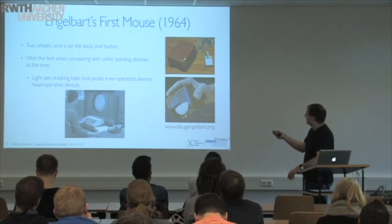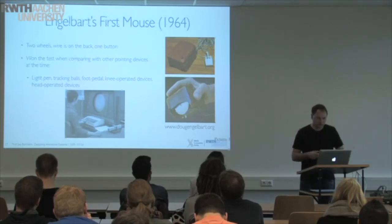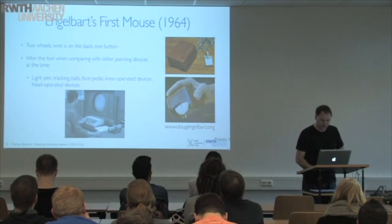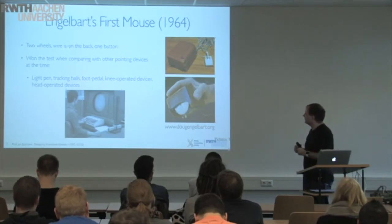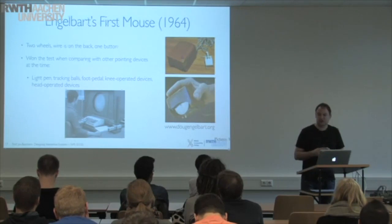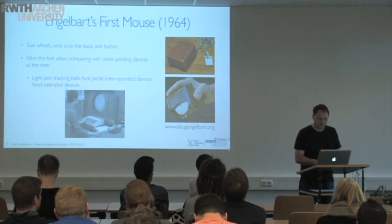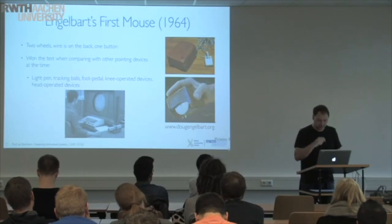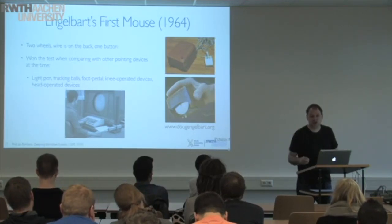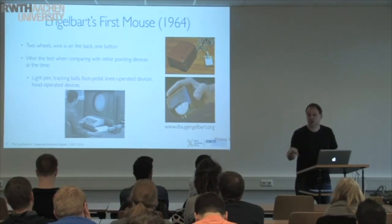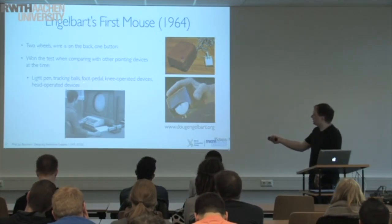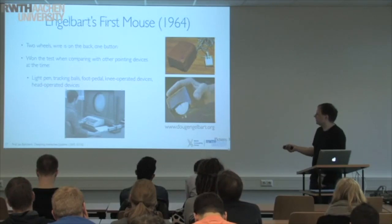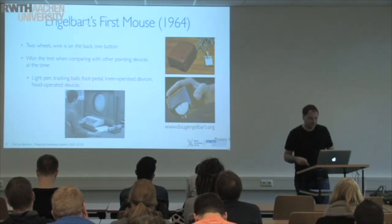The initial mouse only had a single button — that's how it started out — and then the whole discussion started of how many buttons should we have on a mouse. They found that the mouse was faster to acquire a target than any other pointing device. They had an array of three-by-three objects on screen and made people press the space bar, grab the pointing device, and try to click on each object — a little user study to determine which was the fastest device. The mouse definitely won over options like the light pen, trackball, foot pedal, knee-operated devices, and even head-operated devices.